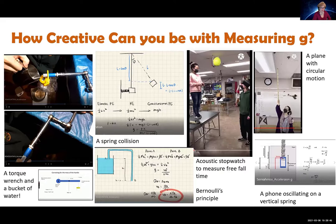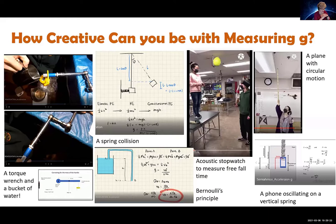When Valerie and I and our volunteers were looking at the videos, we were stunned by the students' creativity. Who would have thought a torque wrench in a bucket of water could measure g? Or that someone would build a small airplane, study circular motion, and measure g from that? Or a phone oscillating on a spring and recording the oscillation to measure g? Another was related to Bernoulli's principle — the creativity was just there.